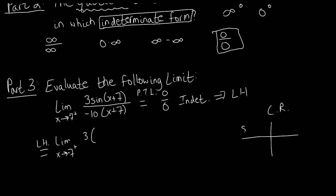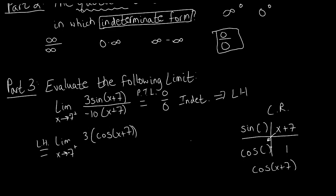Using the chain rule on sine of (x + 7): the derivative of sine is cosine, and the derivative of (x + 7) is 1. So we get 3 times cosine of (x + 7) times 1, which is just 3 cosine(x + 7). We can drop the extra parentheses since 3 times cosine of (x + 7) is the same as 3 cosine(x + 7). That's the derivative of our numerator.